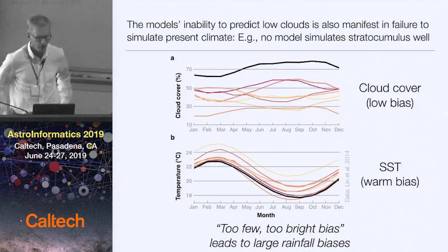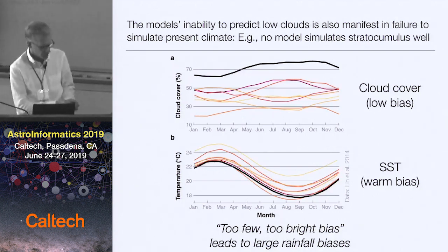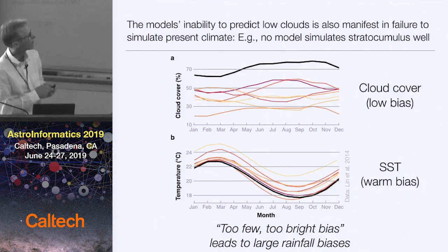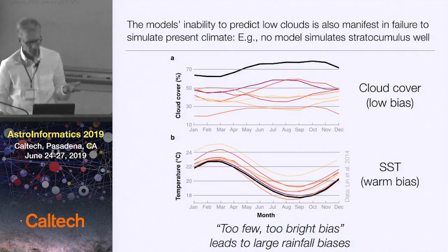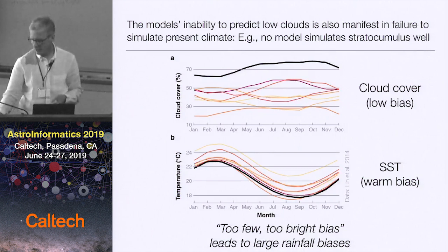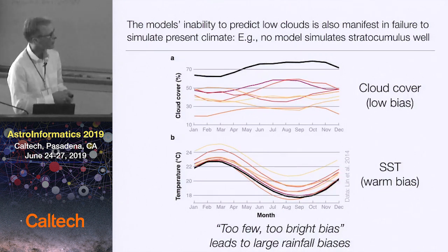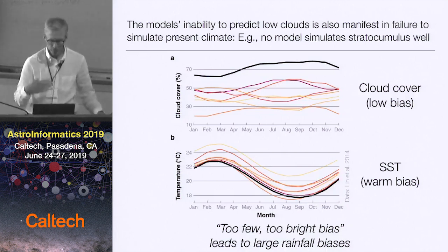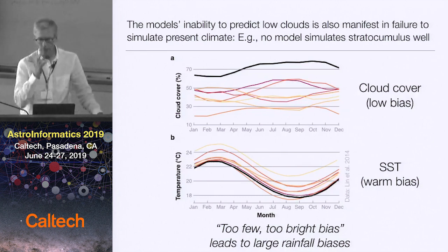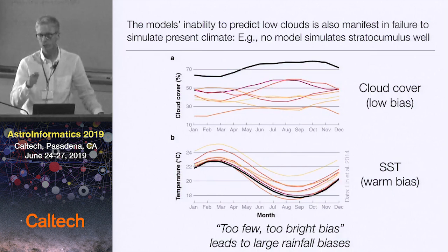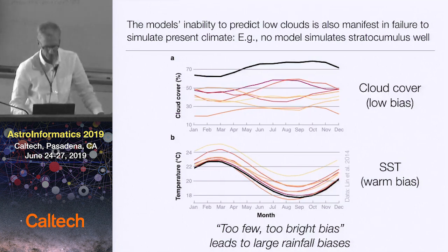Here's an example of how models do poorly with clouds. The black line shows observations of cloud cover off the coast of South America — about 70% stratocumulus cloud cover year-round. Climate models underestimate that cloud cover by a factor of two or three. As a result, the ocean underneath is too warm. This bias is well known — it's called the 'too few, too bright' bias: too few clouds, and they're made artificially a little brighter per unit cloud so the energetic biases don't get as bad as they otherwise would.